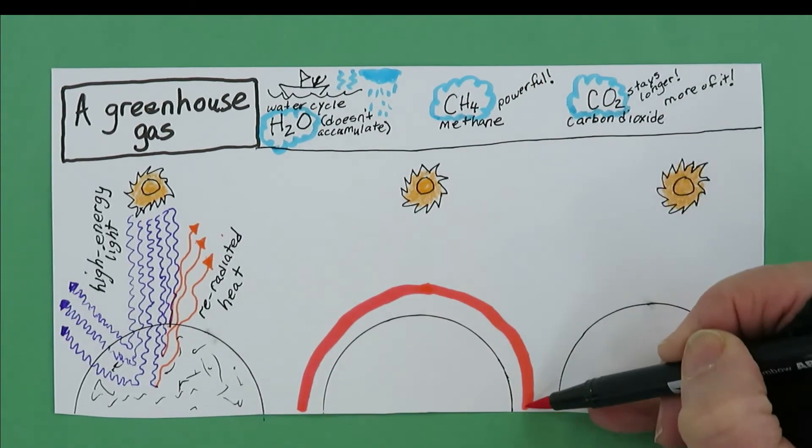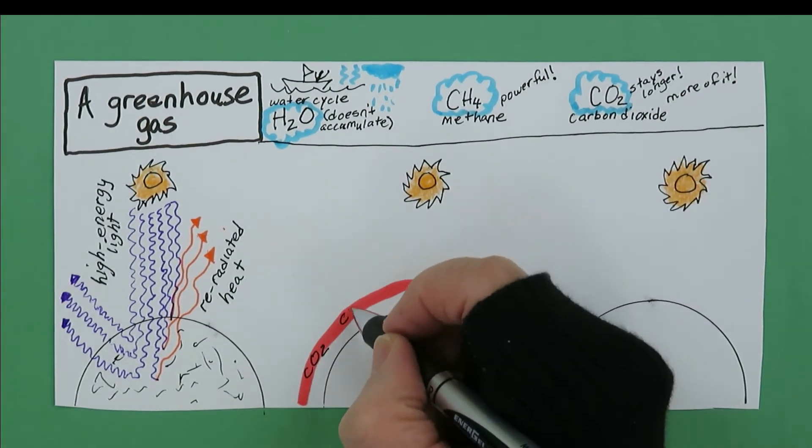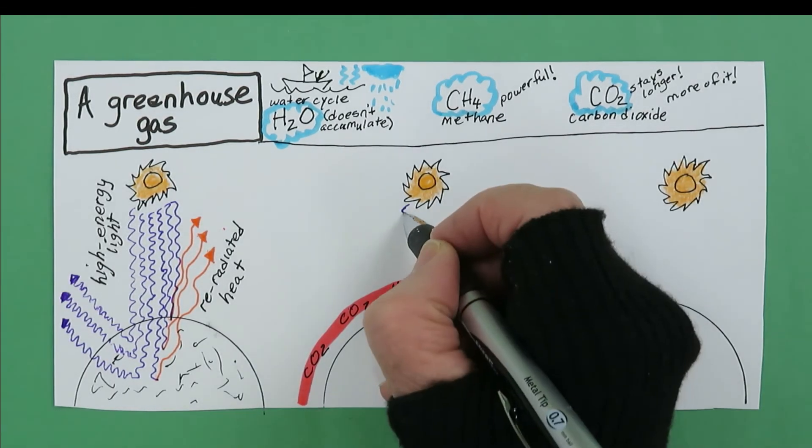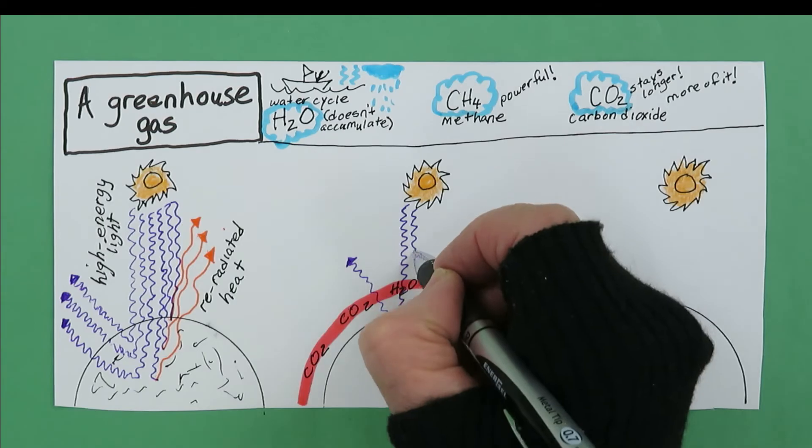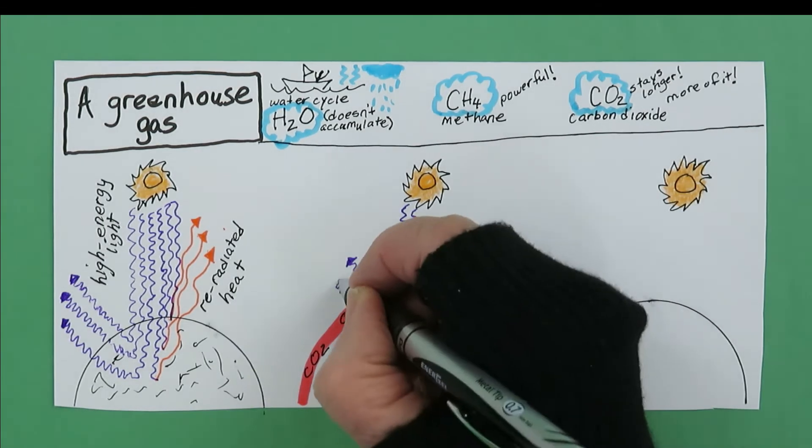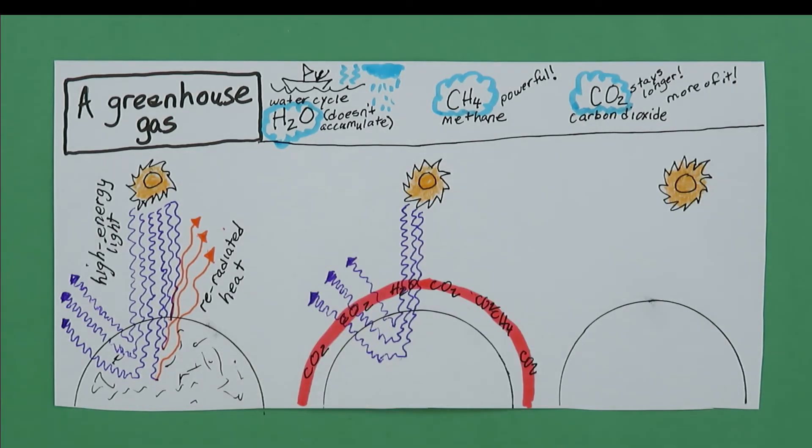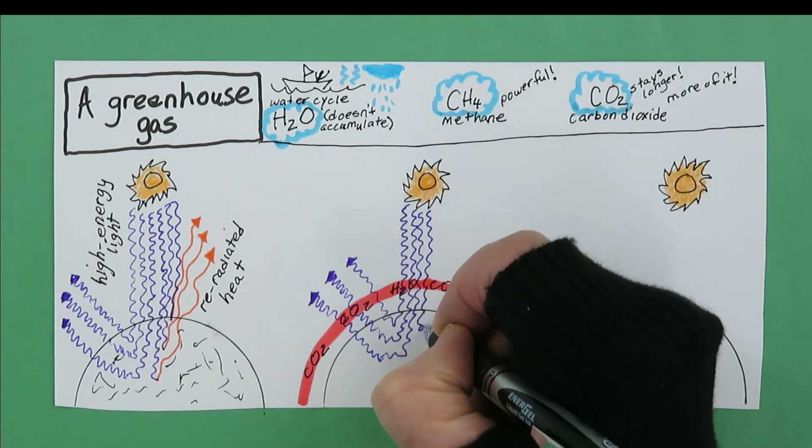In the second scenario, the sun still sends high energy light to Earth, but this Earth has greenhouse gases in its atmosphere. The high energy light from the sun can pass right through them. The difference in this Earth, though, is that the energy that was absorbed and re-radiated as heat cannot pass back through the gases.